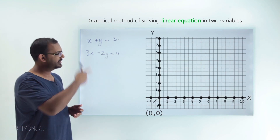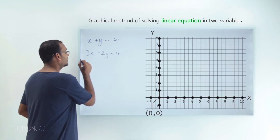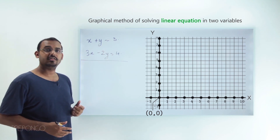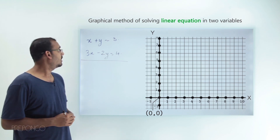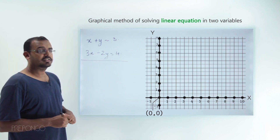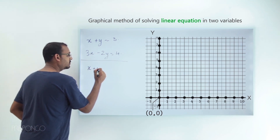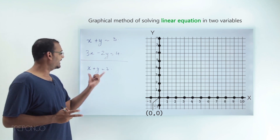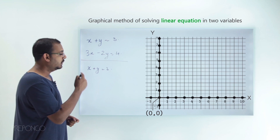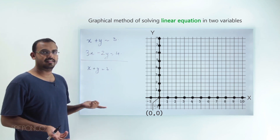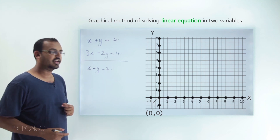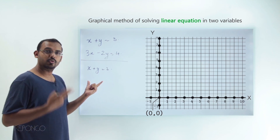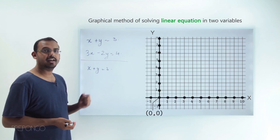Let's take these two equations and solve them graphically. We have the x-axis and the y-axis on our graph. The first thing we need to do is represent these two equations as two lines on the graph. To draw a line, we need any two points which lie on it — if we find two such points, we can connect them to get the line. Let's start with the first equation, x + y = 3, and find two points which satisfy it.